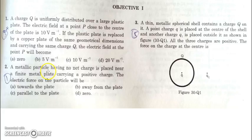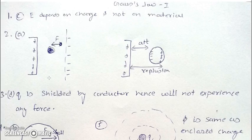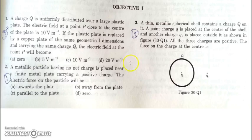In the next question, there is a metallic particle which is placed near a finite metal plate which is having positive charge. This is a plate finite and this is a net zero metallic particle. As induction will take place and attraction will dominate, overall attraction will take place between the plate and the particle. So the particle will experience a force towards the plate.